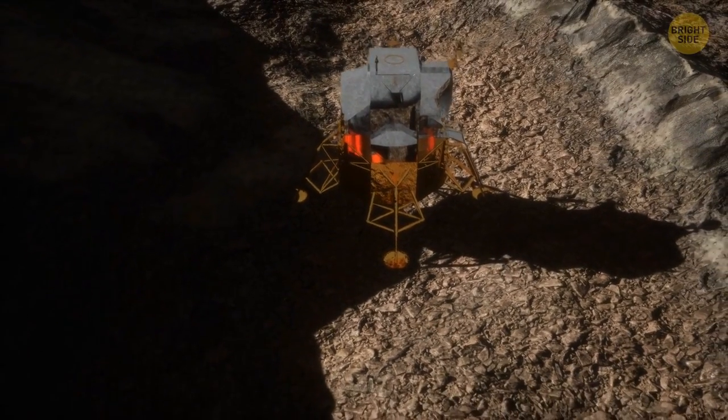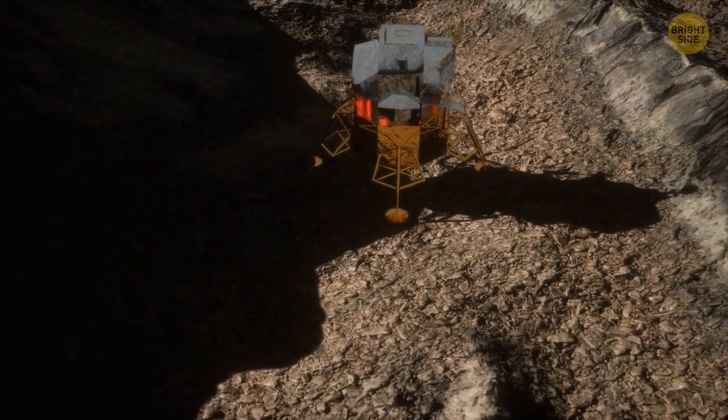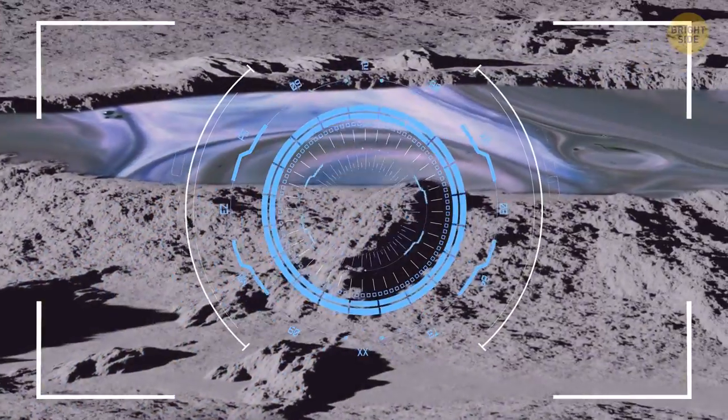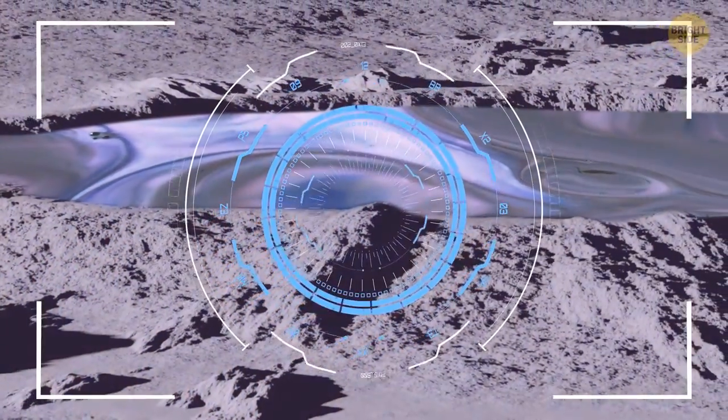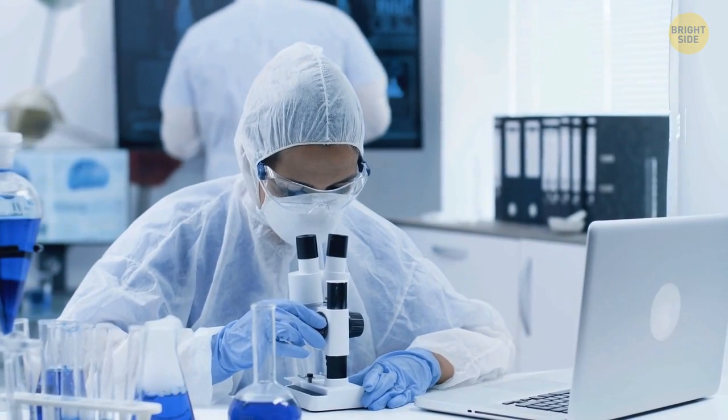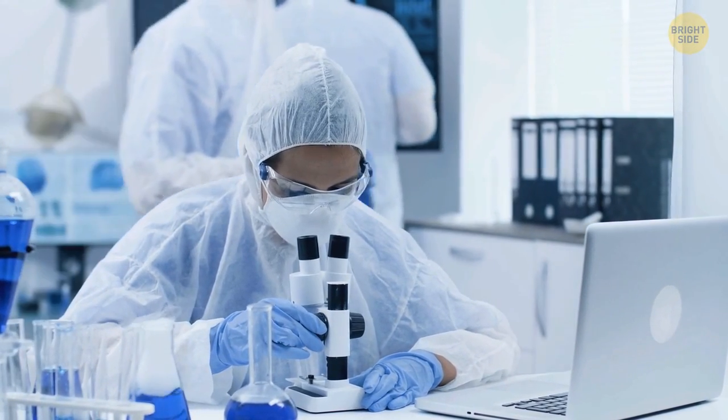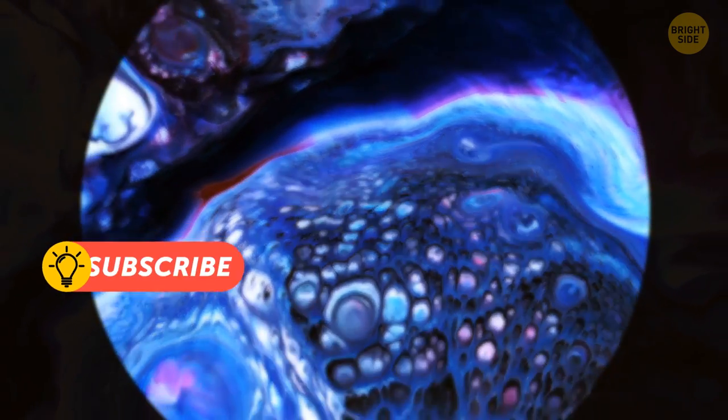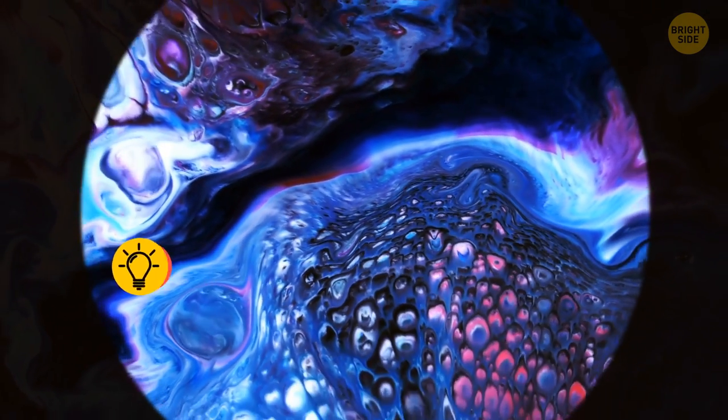Chang'e-4 cautiously nears the crater to examine the weirdly colored stuff. The machine uses special equipment that detects the light reflected off the substance. It's supposed to help the researchers to understand the structure of the material. Unfortunately, the nature of the unusually colored finding has remained a mystery for over a year.